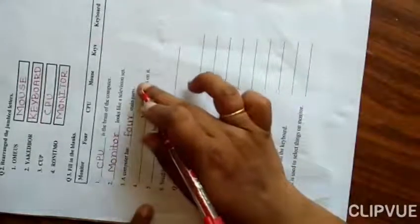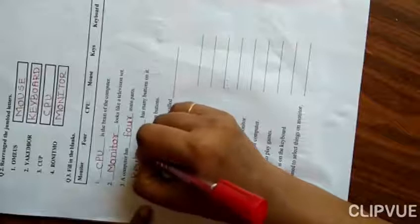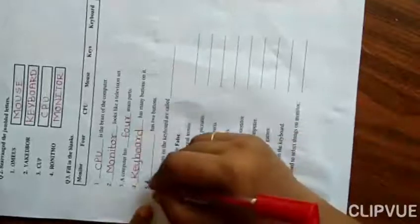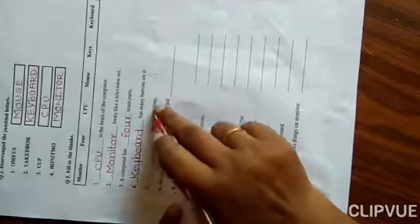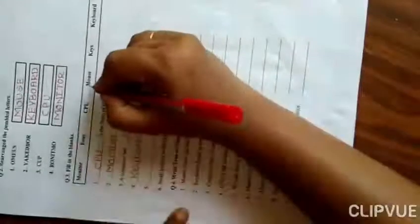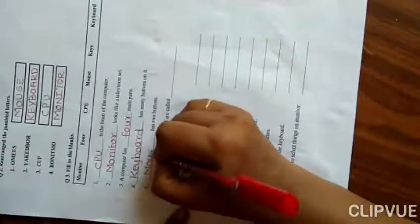Blank has many buttons on it. Who has many buttons? Yes, answer is keyboard. Write down keyboard. Now fifth fill in the blank: blank has two buttons. Who has two buttons? Mouse. M-O-U-S-E. Mouse. Mouse has two buttons.